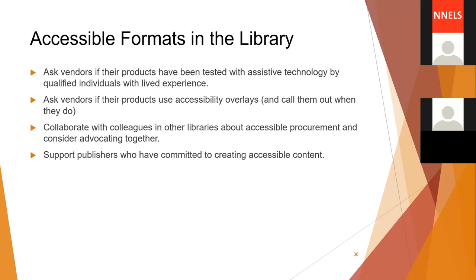In the library, you can ask vendors if their products have been tested with assistive technology by qualified individuals with lived experience. Ask vendors if their products use accessibility overlays, and call them out when they do. Collaborate with colleagues and other libraries about accessible procurement and consider advocating together. Support publishers who have committed to creating accessible content — some can be found by looking for Benetech certification or statements committing to WCAG guidelines or accessibility standards.